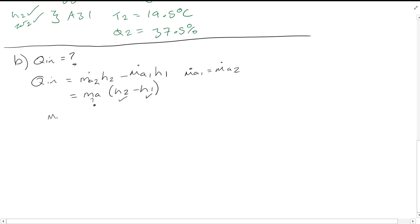Now Ma we know is equal to volume flow rate divided by the specific volume, and we can find from the chart A31 at point 1. We know specific volume is equal to 0.809 meters cubed per kg.